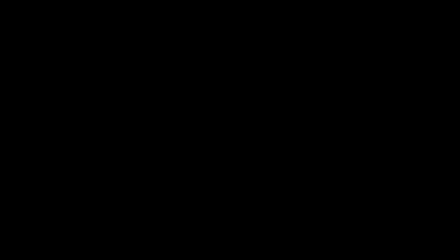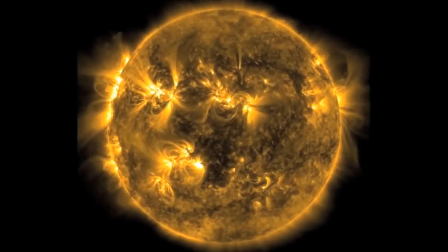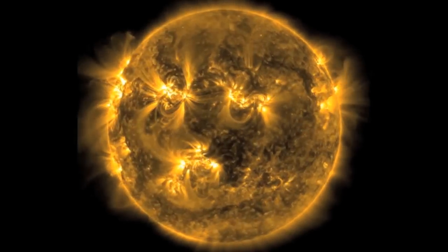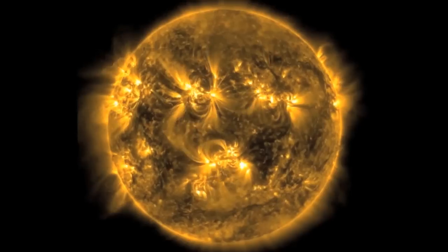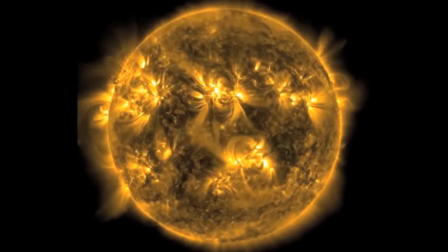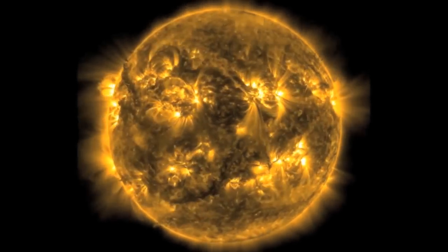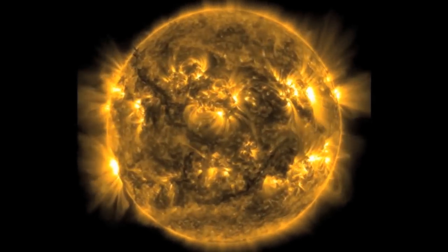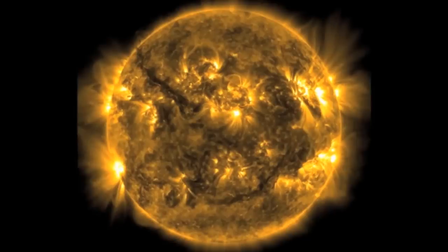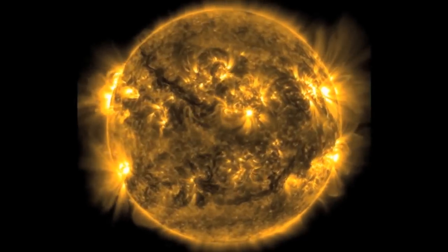Take a quick look at this video. This shows our sun. The sun, of course, is our star — the star that the Earth revolves around. It's about 93 million miles away from us.